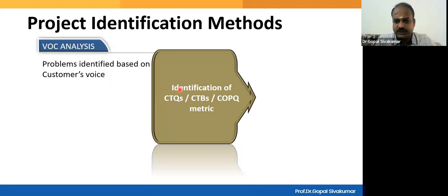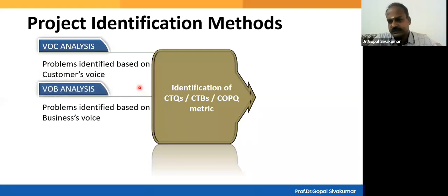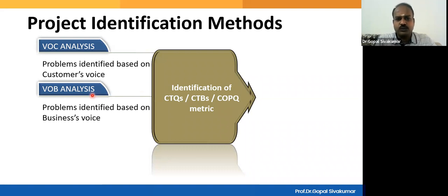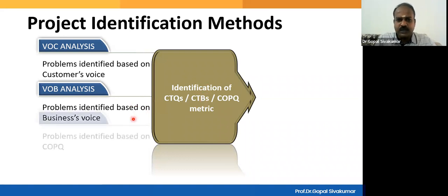The Voice of Customer is converted into CTQs. Similarly, the Voice of Business — which comes from managers, leaders, CXO-level executives, and financial data — if you see a downward-going trend or pain-related feedback, those can be considered improvement opportunities. You convert the Voice of Business into CTBs, Critical to Business characteristics.